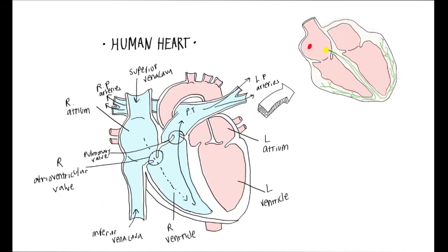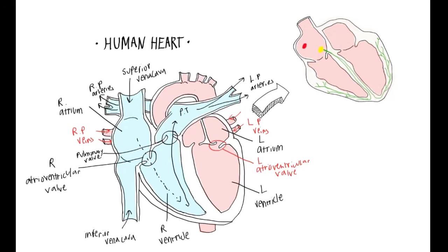For the left side of the heart, we see it colored in red because it is receiving oxygenated blood through the pulmonary veins — here are the left pulmonary veins and the right pulmonary veins. Blood from the pulmonary veins flows into the left atrium, which later flows into the left ventricle. However, the left atrioventricular valve, also known as the bicuspid valve, must first open. When blood from the left atrium fills the left ventricle, it pumps the blood through the major artery known as the aorta.